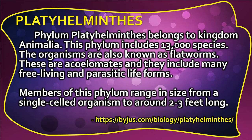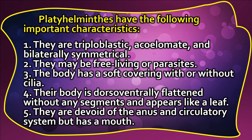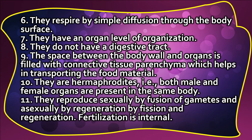Platyhelminthes have the following important characteristics: 1. They are triploblastic, acoelomate, and bilaterally symmetrical. 2. They may be free-living or parasites. 3. The body has a soft covering with or without cilia. 4. Their body is dorso-ventrally flattened without any segments and appears like a leaf. 5. They are devoid of an anus and circulatory system but have a mouth. 6. They respire by simple diffusion through the body's surface. 7. They have an organ level of organization. 8. They do not have a digestive tract. 9. The space between the body wall and organs is filled with connective tissue parenchyma, which helps in transporting food material.